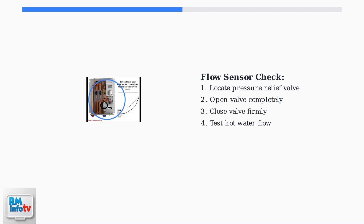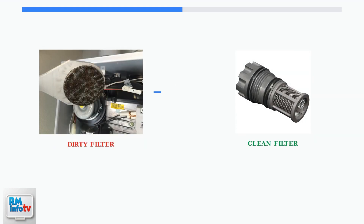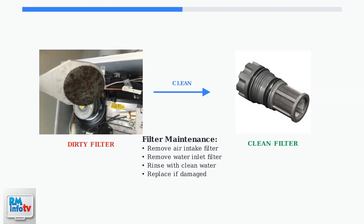When basic resets don't solve your Navian tankless water heater problems, it's time for systematic troubleshooting and maintenance procedures. First, inspect the flow sensor by opening and closing the pressure relief valve — this simple action can reset the sensor and restore proper water flow detection. Clean both air and water inlet filters regularly, as dirty filters restrict flow and can prevent proper heater operation. Remove filters carefully and clean with water, or replace if heavily clogged.